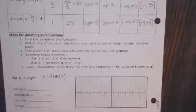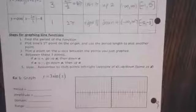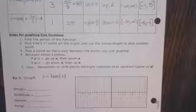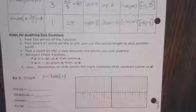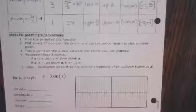To graph using these transformations, you first find the period of the function, because that tells you how much space you need to complete a full cycle. Then plot the sine's first point on the origin and use the period length to plot another point. Plot a point on the x-axis between those two points. Then between these three points, if A is positive go up A then down A. If A is negative, go down A then up A. Remember to shift points left or right opposite of C, and up or down the same as D.